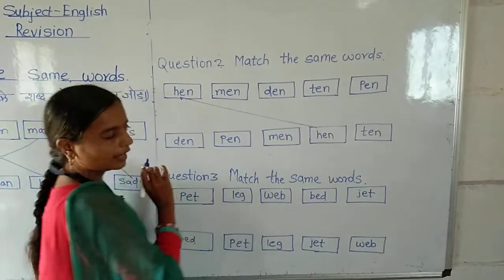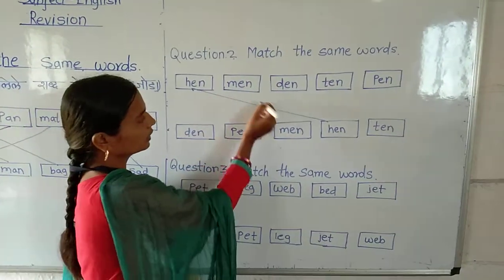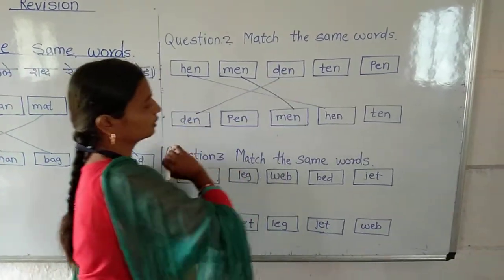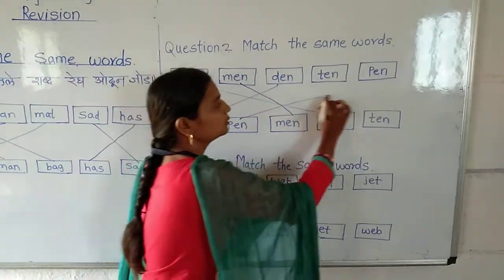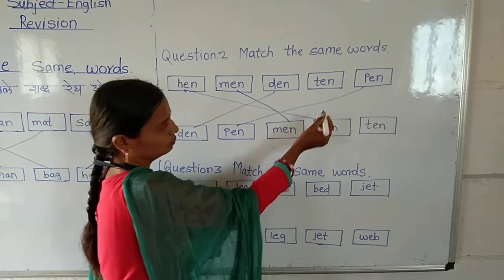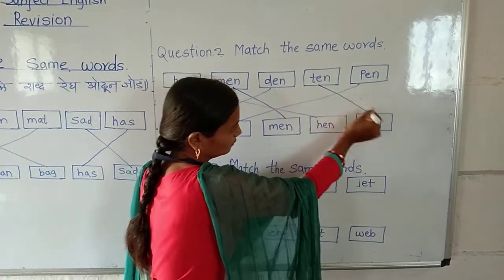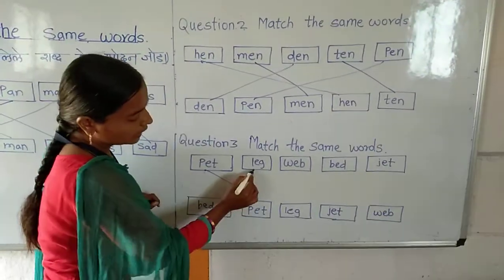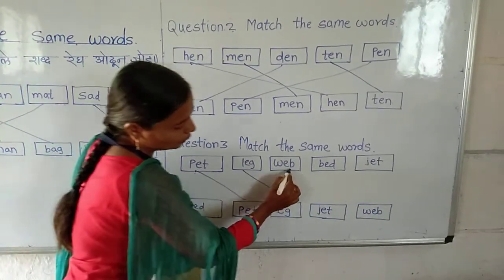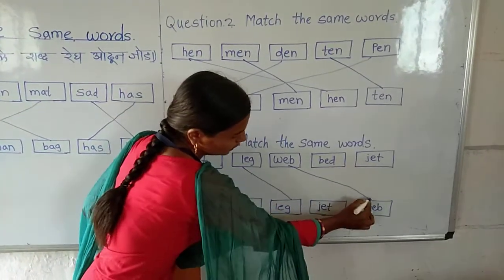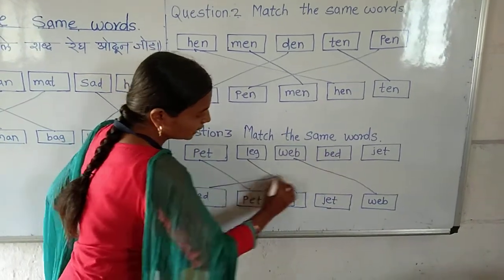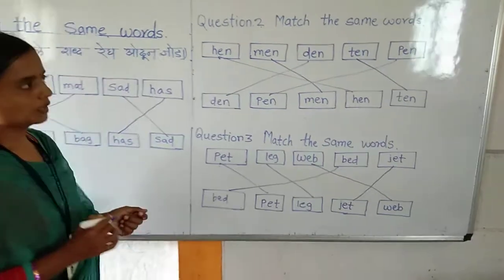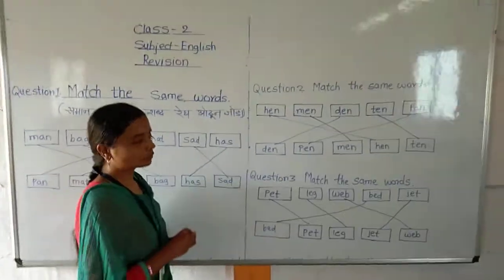Here is the hen word. Ok, then main — here is the main. Dane. Pain — now we will match the pain word with their same names. Ten. Then next: pet. Leg. Weight. Then bed. And jet. In this way we have to solve this question.